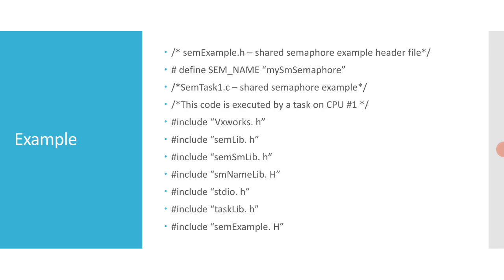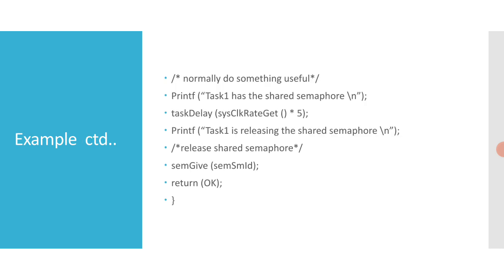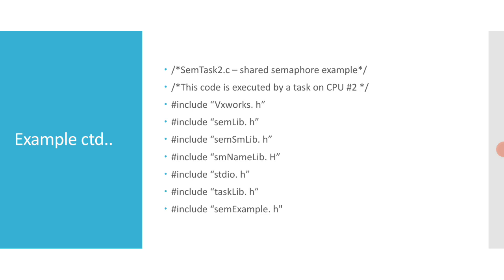In the code, we have the define SEM_NAME as 'my_sm_semaphore'. In sem_task_one, we include semLib, semSmLib, semNameLib, stdio.h, and taskLib.h. The task creates a shared semaphore, grabs it and holds it for a while, does something useful — with a task delay of five times the system clock rate — then prints 'task one is releasing the shared semaphore', calls sem_give, and returns.